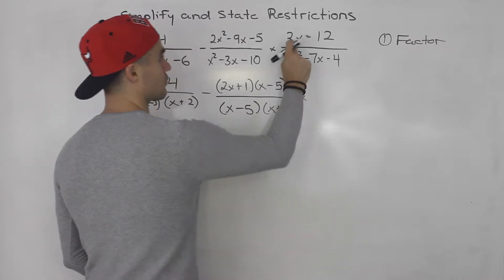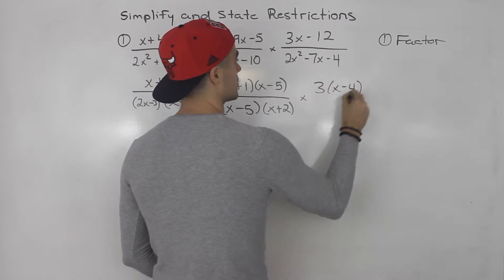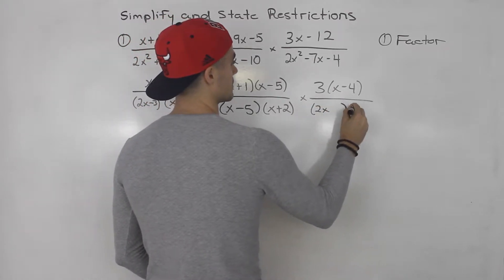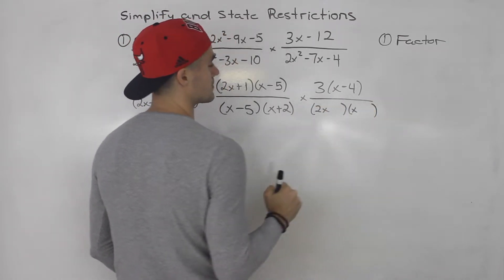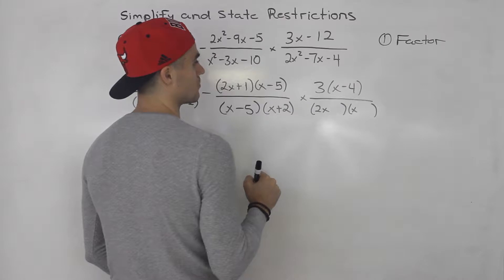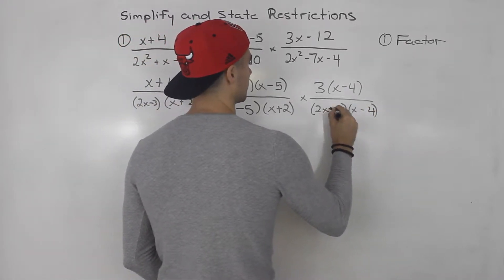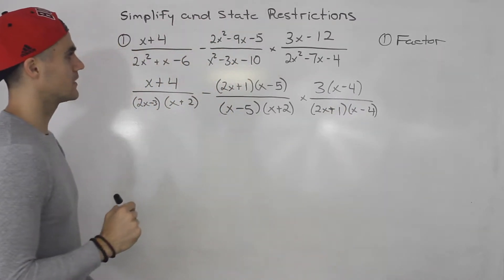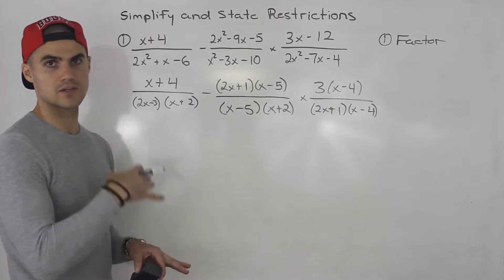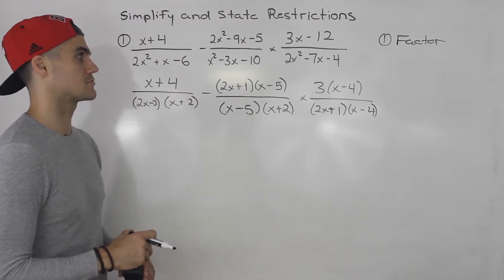Then we're going to be multiplying. 3x minus 12, we can take out a 3 from that. That would be x minus 4. And then this here factors into 2x times x minus 4 plus 1. So took everything and factored it. That's always the first step. Same as when we were multiplying and dividing, and then when we were just adding and subtracting.